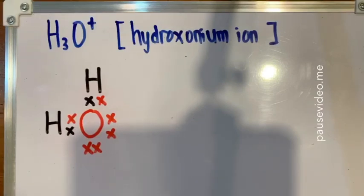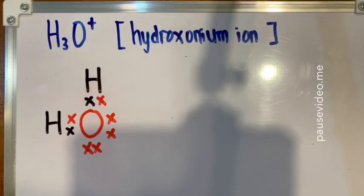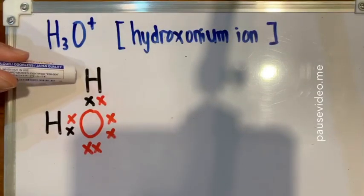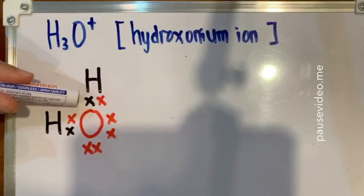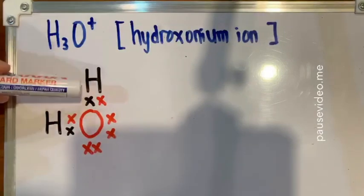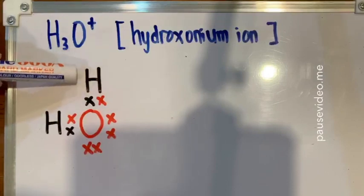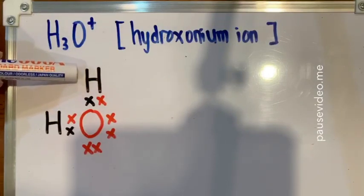In order for the oxygen atom to achieve the octet electron arrangement, it needs two more electrons. These two electrons will come from the hydrogen atoms. Each hydrogen atom shares one of its valence electrons with the oxygen atom to achieve the covalent bond. When the hydrogen atom shares its one valence electron with the oxygen, and the oxygen shares one back to the hydrogen, the hydrogen achieves a duplet electron arrangement.